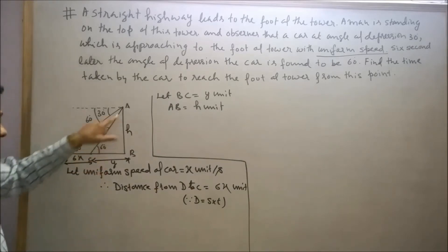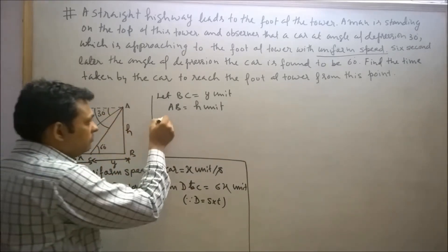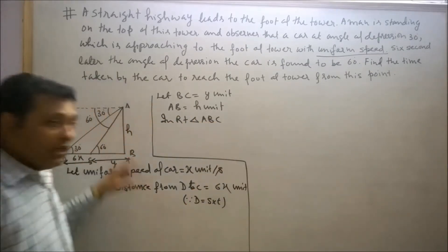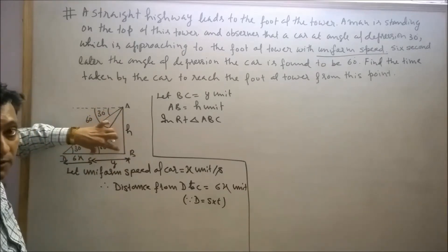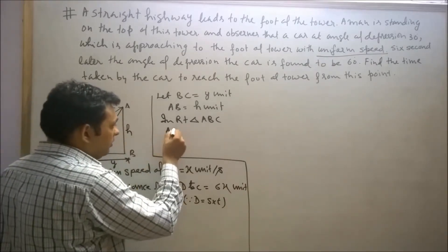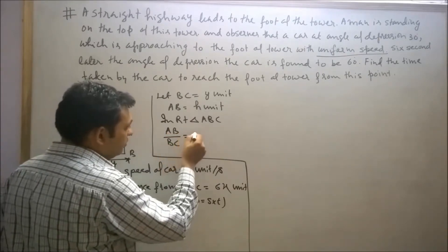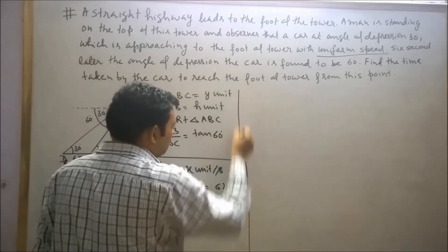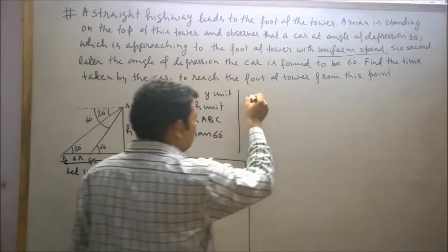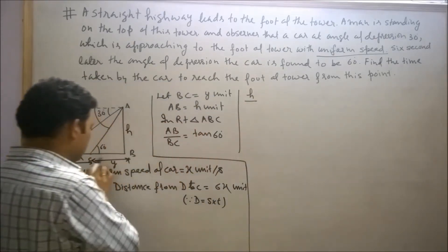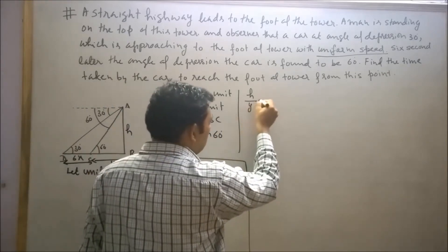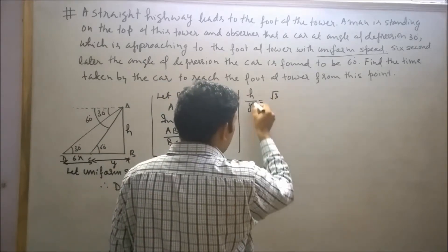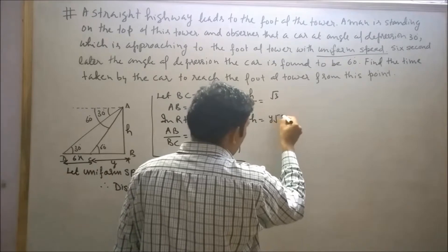Now consider right-angle triangle ABC. AB is the perpendicular and BC is the base, so tan 60° equals AB divided by BC. AB is h units and BC is y units. Since tan 60° equals root 3, we get h equals y root 3. This is equation 1.